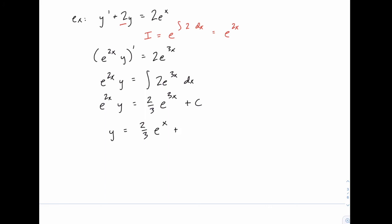And then on the other one, we'll have c divided by e to the 2x, or we can write e to the negative 2x. Either way is fine. If you prefer to write it as c divided by e to the 2x, that's perfectly fine.